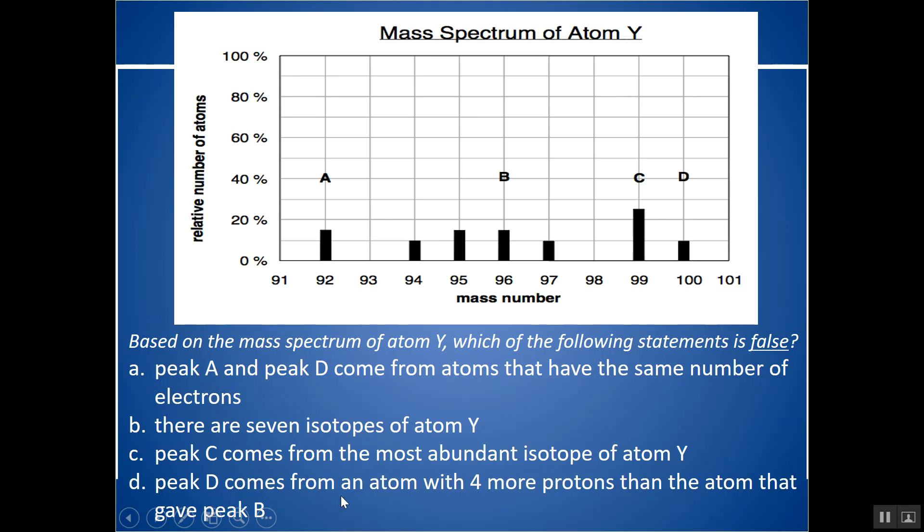Peak D comes from an atom with four more protons. No, we're saying these are all Y. That's why they would all have the same number of protons.